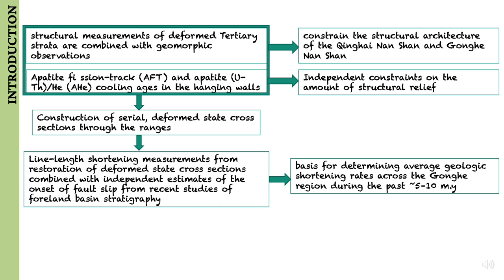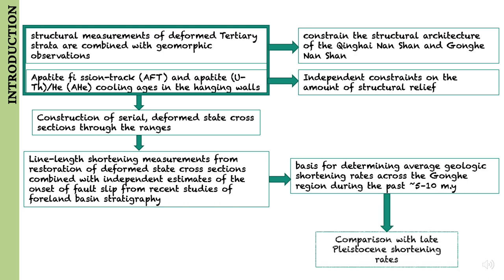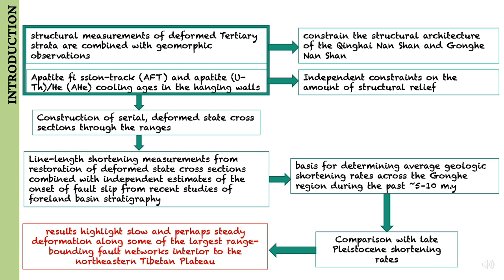Shortening estimates from deformed and restored cross-sections in these and previous studies provide the basis for determining average geologic shortening rates across the Gonghe region during the past 5 to 10 million years. They compare these long-term rates to rates determined along the northwest Qinghai-Nanshan from restoration of a displaced late Pliocene alluvial fan surface. The results highlight slow and perhaps steady deformation along some of the largest range-bounding fault networks interior to the northeastern Tibetan Plateau.